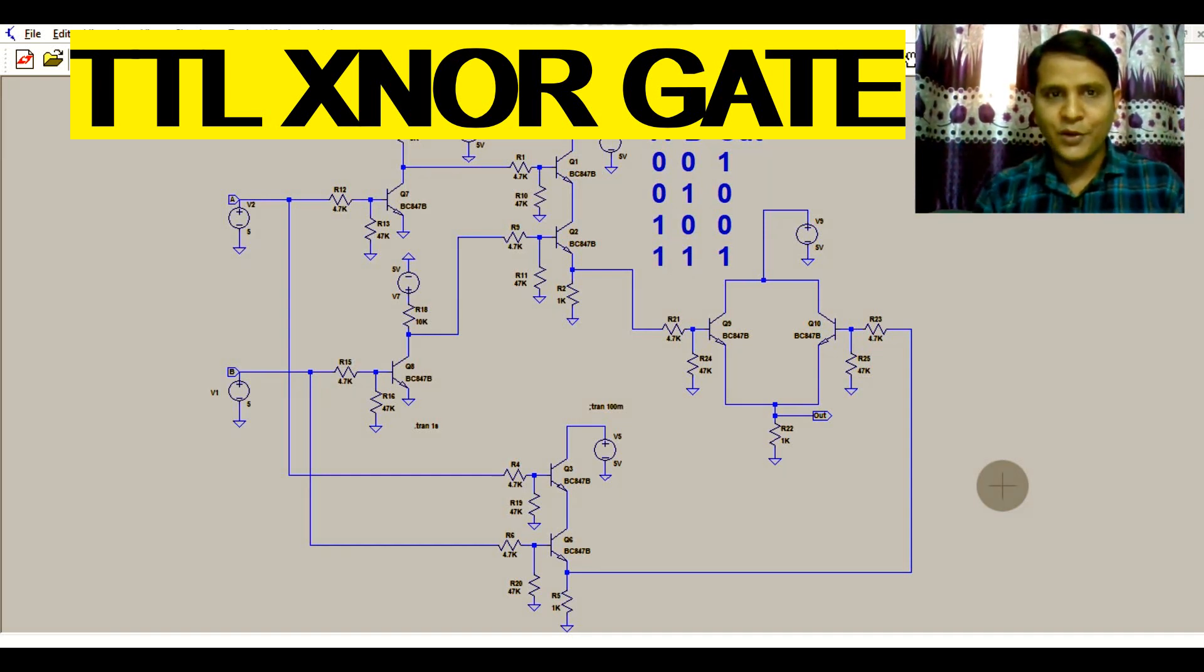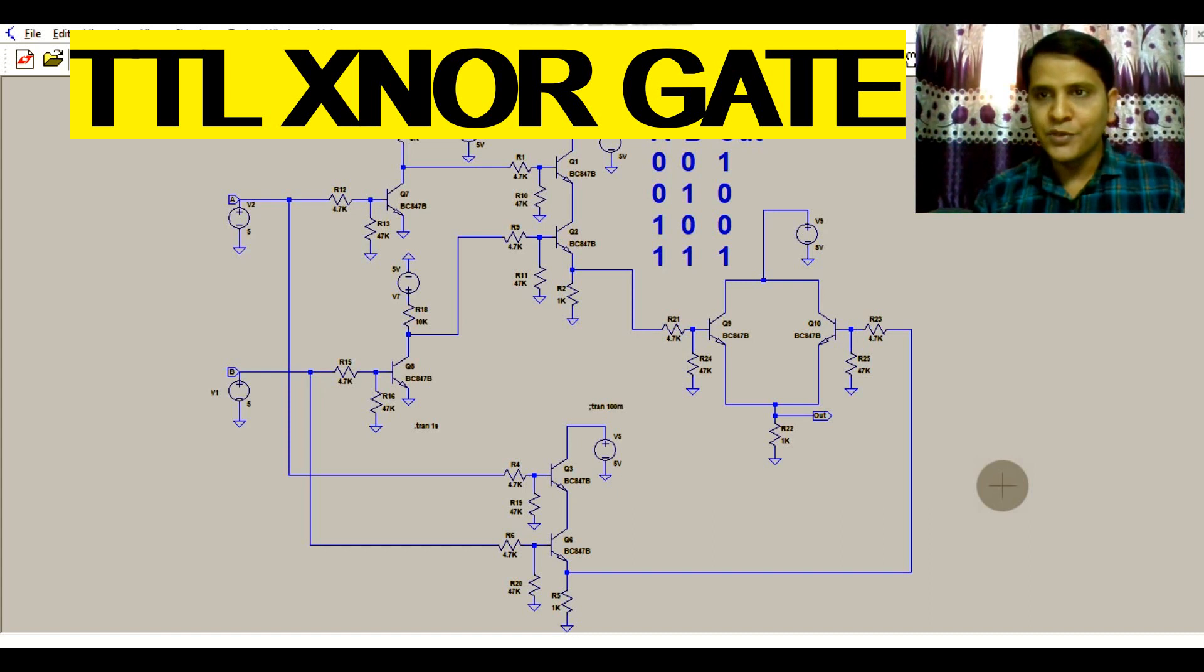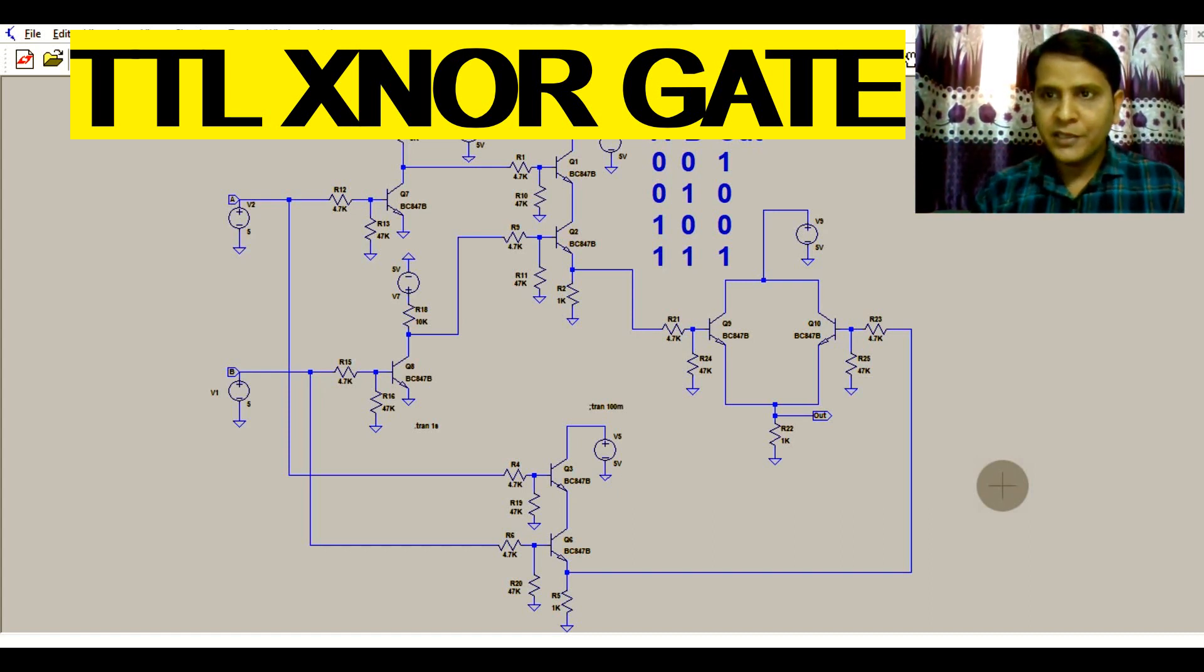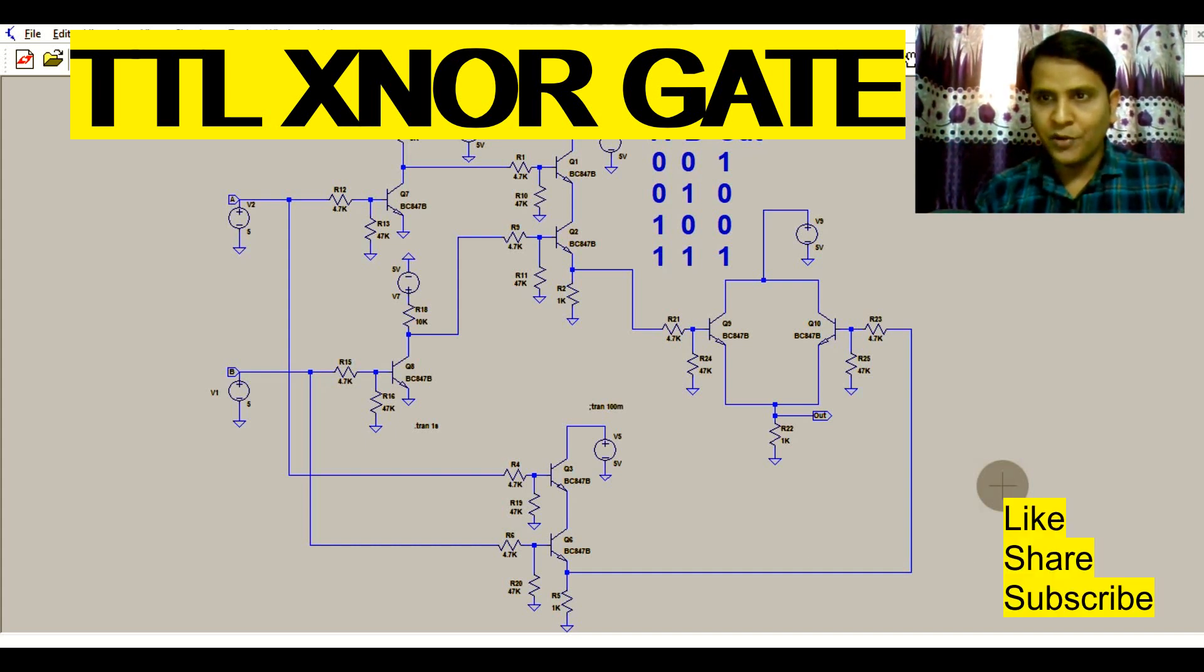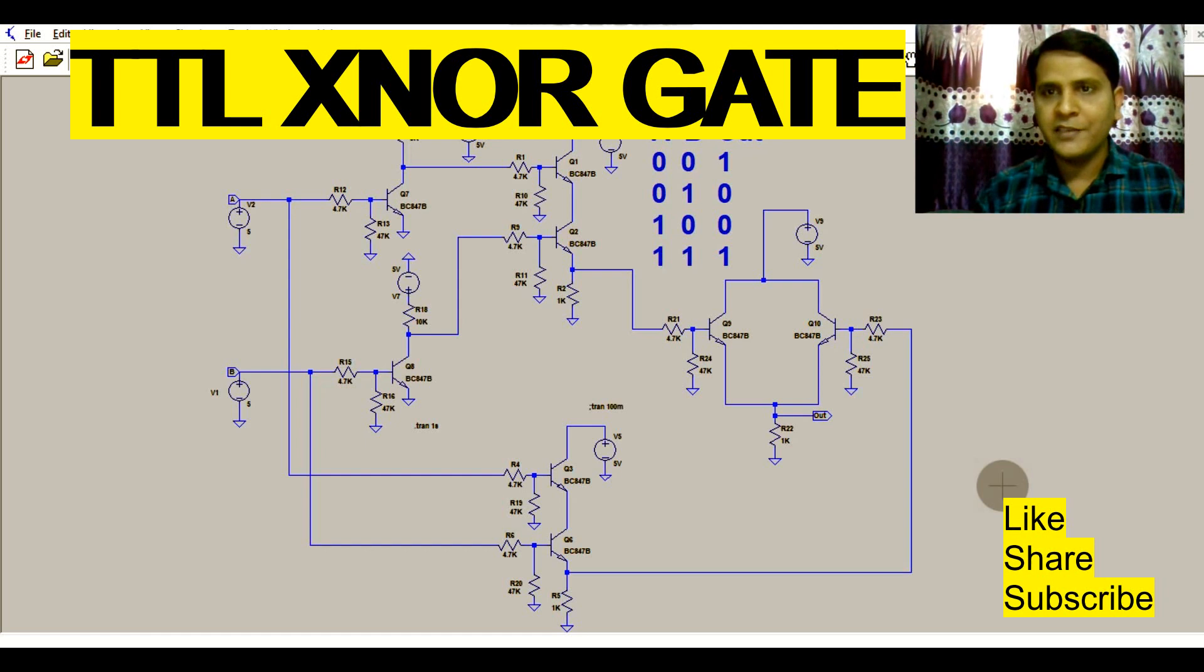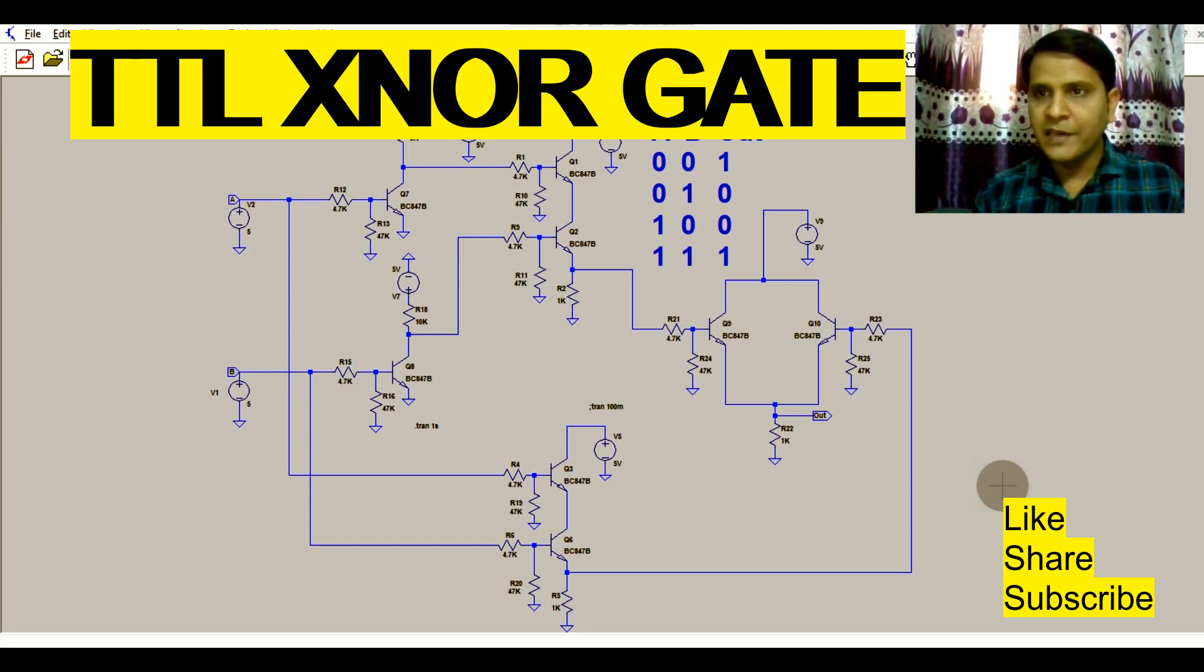If you see, it looks very complex but it works as an XNOR gate. In the last video we understood the operation of XOR gate by using transistor in LTspice. So today we are going to learn about the operation of XNOR gate by using this complex circuit in LTspice. This complex circuit demonstrates the operation of XNOR gate.